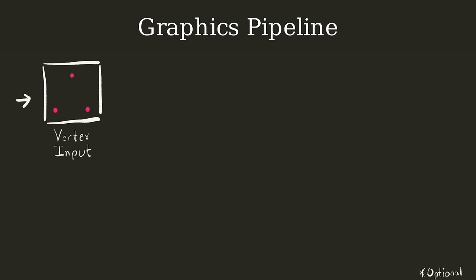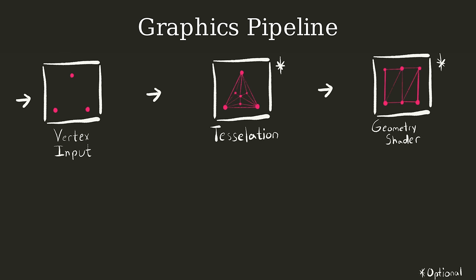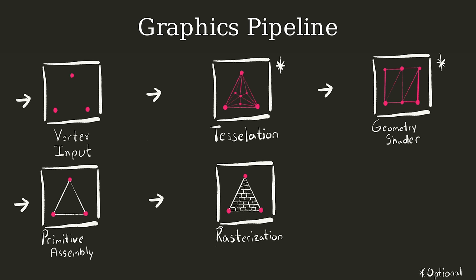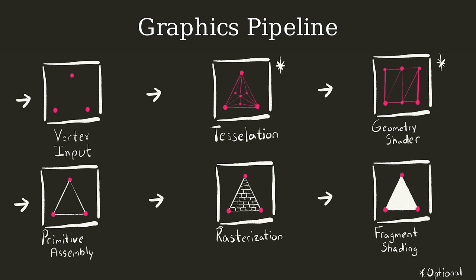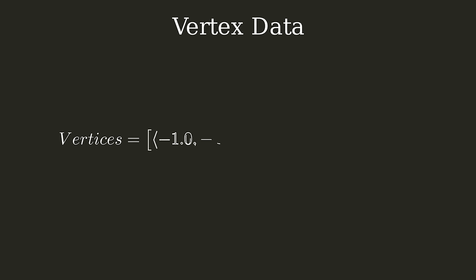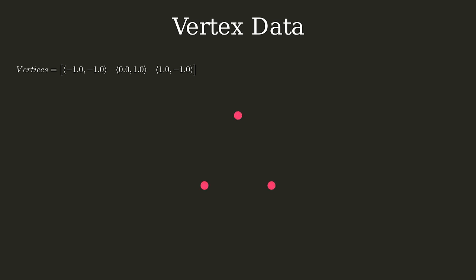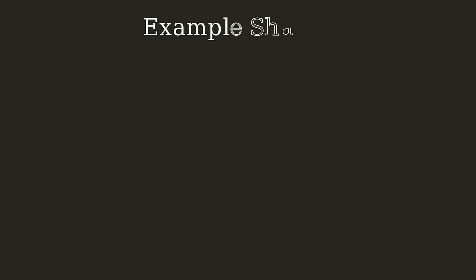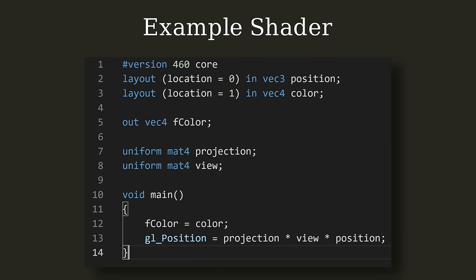The stages are: passing data to the vertex shader, optional tessellation, optional geometry shader processing, primitive assembly, rasterization, and finally fragment shading and final tests. The very first thing OpenGL needs is our vertex data — simply the data about 3D points that create our 3D objects. These points can contain metadata such as which texture is applied, what color this point should be, and whatever other arbitrary data you want to attach. One common feature among vertex data is a position. This vertex data is then processed in a required shader stage called the vertex shader.